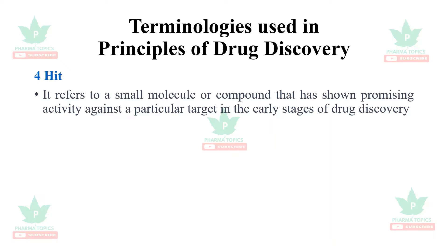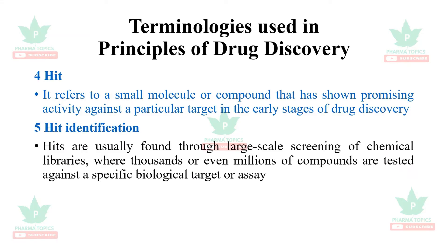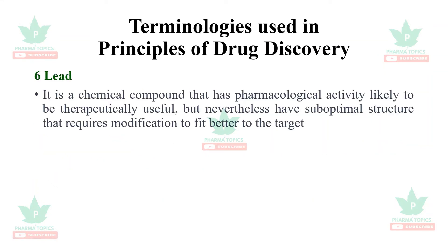Next is: what is a hit? It refers to a small molecule or compound that has shown promising activity against a particular target in the early stages of drug discovery. Hit identification: hits are usually found through large-scale screening of chemical libraries where thousands or even millions of compounds are tested against a specific biological target or assay.